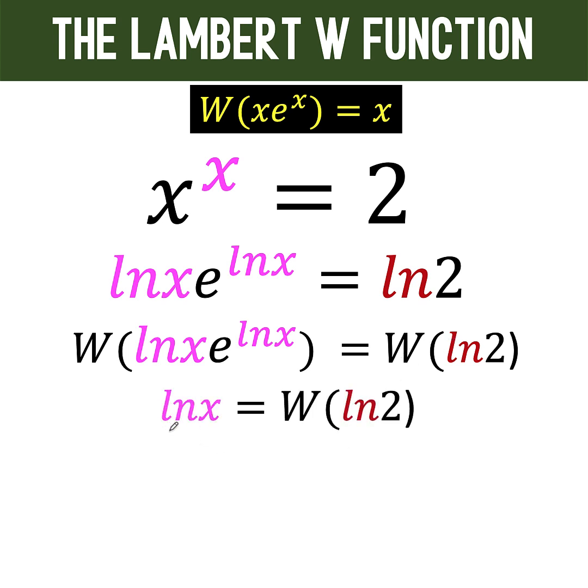Since we are solving for x, we'll perform the inverse operation of taking the natural logarithm, which is raising to the base e. So we take the exponentials of both sides. And we now have this form. Now, e raised to ln x is just x. And we copy the right side.